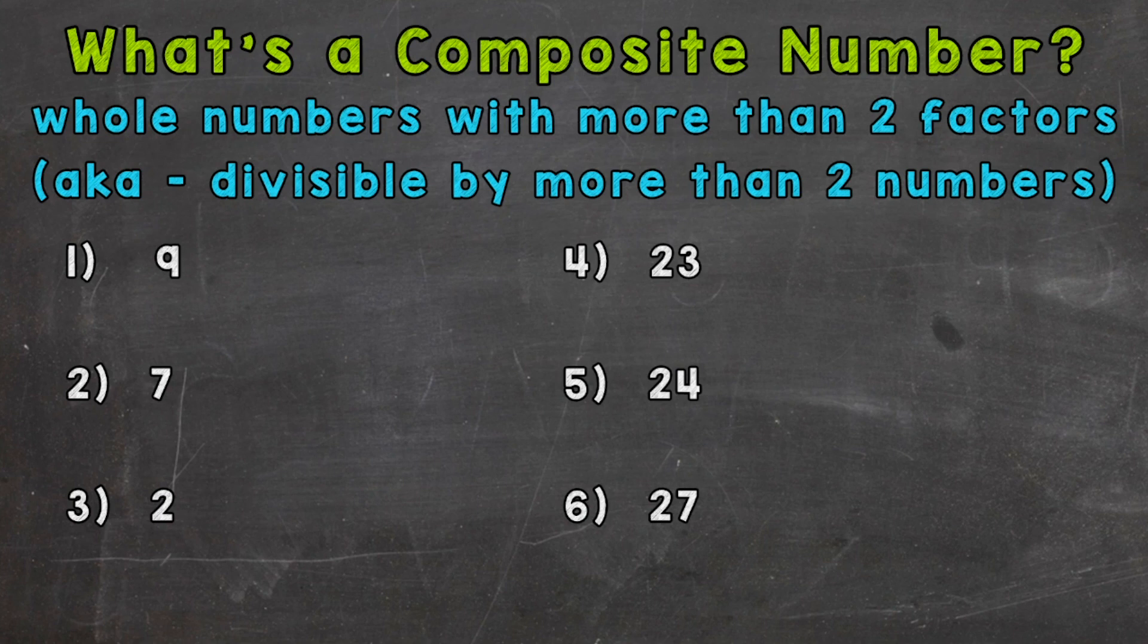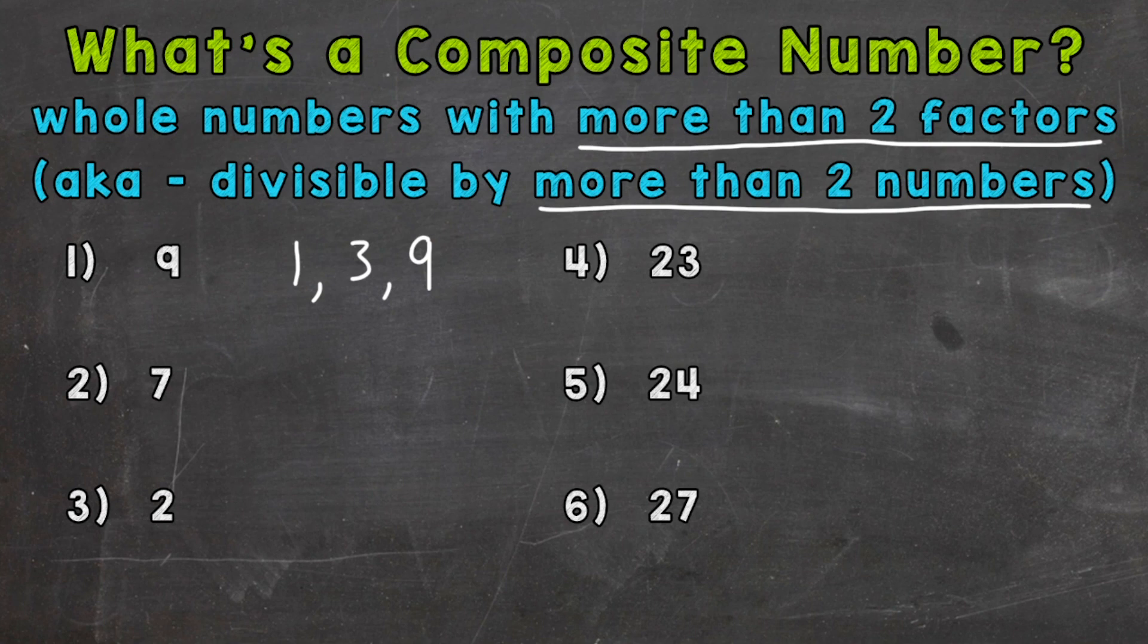So let's go through six examples together to better understand what composite numbers are. We'll jump into number one, where we have nine. We need to think of the factors of nine. Although not the most technical way of thinking about it, all the numbers that go into nine, or the technical definition, the numbers that multiply together to equal nine. We know one times nine equals nine, so one and nine are factors. And we know three times three equals nine. So one, three, and nine are factors of nine. Nine has more than two factors, or it's divisible by more than two numbers. Nine is divisible by one, three, and nine. So nine is composite.